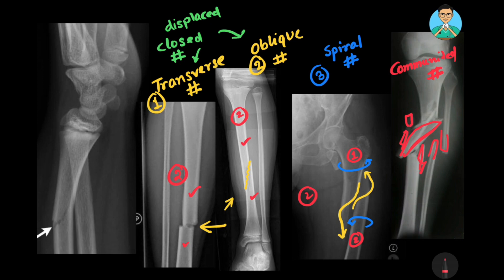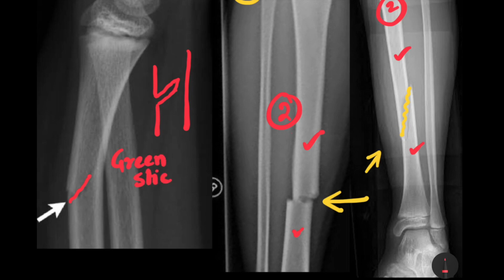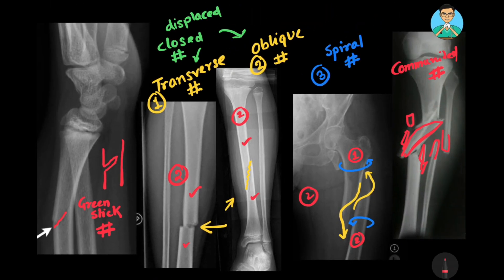Fractures where you have more than two components are known as comminuted fractures, and the direction of force application is very difficult to determine. Now, there are also fractures where you have a fracture line but the bone is not separated into more than one component — as in this case, where the fracture line is incomplete. Just a part of the bone is cracked, as you can see in the drawing. This type of fracture is known as a greenstick fracture, where the bone remains intact with just a crack and only one fragment.